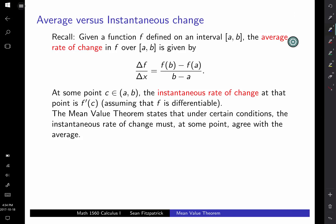So the mean value theorem has to do with the interaction between average and instantaneous rates of change. So we know that if we have a function defined on some closed interval, we can talk about the average change or the average rate of change of the function over that interval. We just take the change in y over the change in x over that interval.